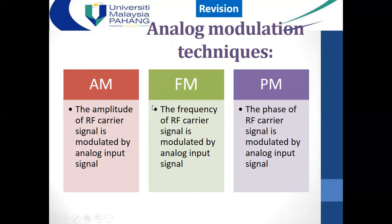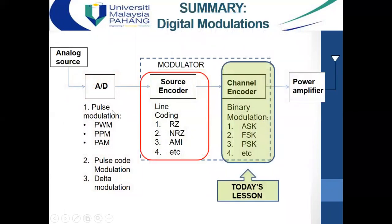In analog modulation, the signal component or data is a continuous waveform, whereas for digital modulation binary data is used. AM is similar to ASK, FM to FSK, and PM to PSK. In our last lesson we focused on source encoding, meaning line coding. Today our focus is on binary modulation, starting with ASK.